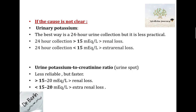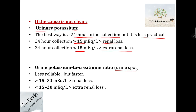If after history and physical examination the cause is still not clear, order urinary potassium. The best way is 24-hour urine collection — though less practical — where potassium more than 15 mEq indicates renal loss, and less than 15 indicates extra-renal loss. A more practical alternative is a urine spot test checking the urine potassium-to-creatinine ratio. It's less reliable but faster: levels more than 15–20 indicate renal loss, and less than 15–20 indicate extra-renal loss.